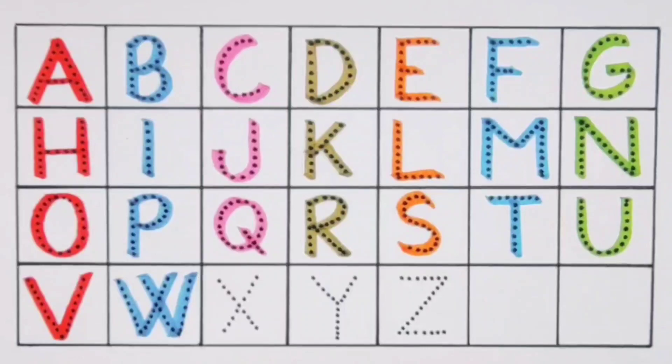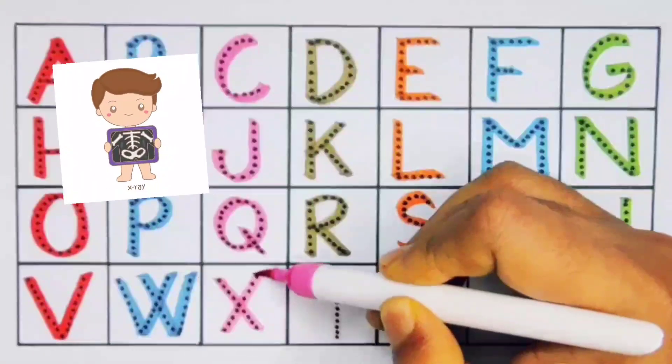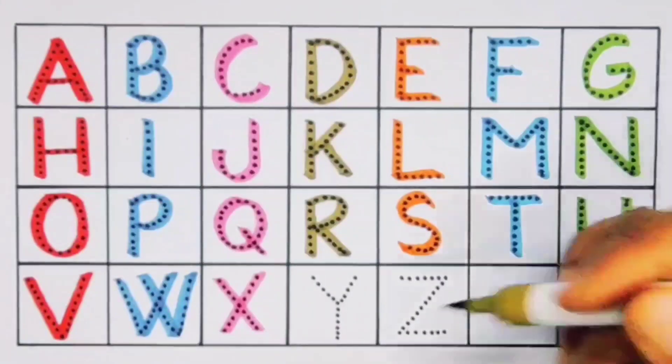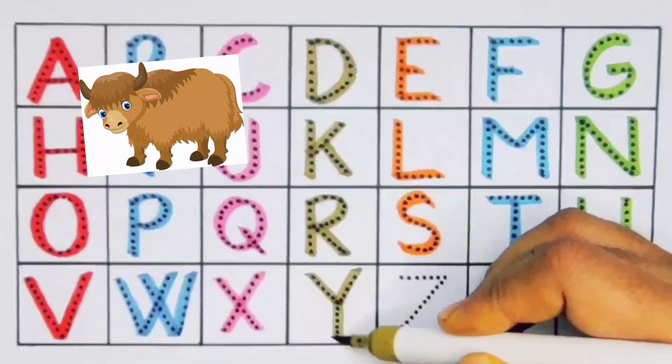Next kids X, X for x-ray, X for x-ray. Next Y, Y for york, Y for york.